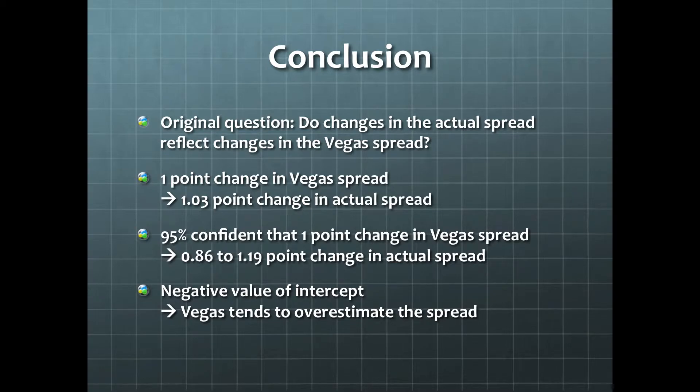We are 95% confident that for a 1-point change in the Vegas spread, there would be between a 0.86 and 1.19-point change in the actual spread.